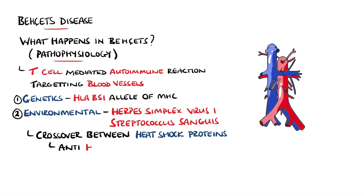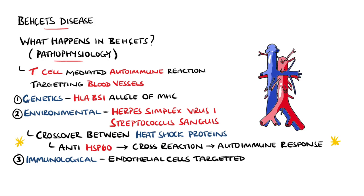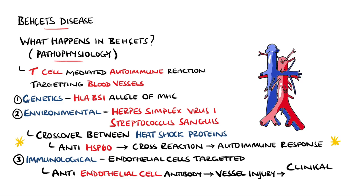Some theories suggest that these infections trigger Behçet's disease through a crossover between heat shock proteins in the microorganism and those in humans. For example, in response to Streptococcus sanguis heat shock protein, anti-heat shock protein 60 is produced, which is thought to cross-react with a human heat shock protein and trigger an immune response. The autoimmune reaction targets blood vessels, in particular endothelial cells, which is why anti-endothelial cell antibodies have been implicated in the pathogenesis as well.